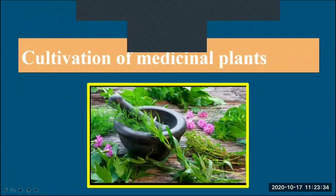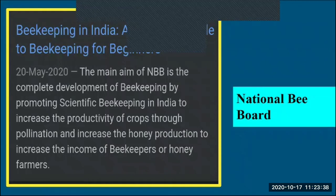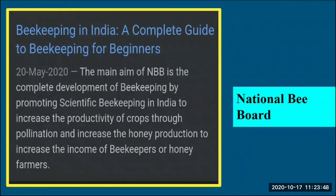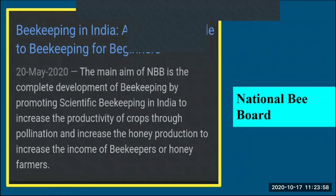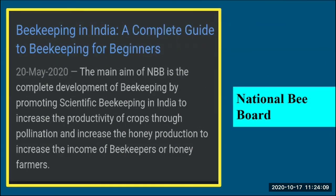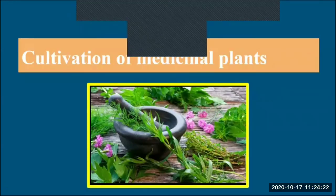For beekeeping, there is a National Bee Board (NBB) whose main aim is the complete development of beekeeping by promoting scientific beekeeping in India. The NBB aims to increase crop productivity through pollination, increase honey production, and increase the income of beekeepers or honey farmers, contributing to employment generation through a natural process that does not harm the hive or the bees.